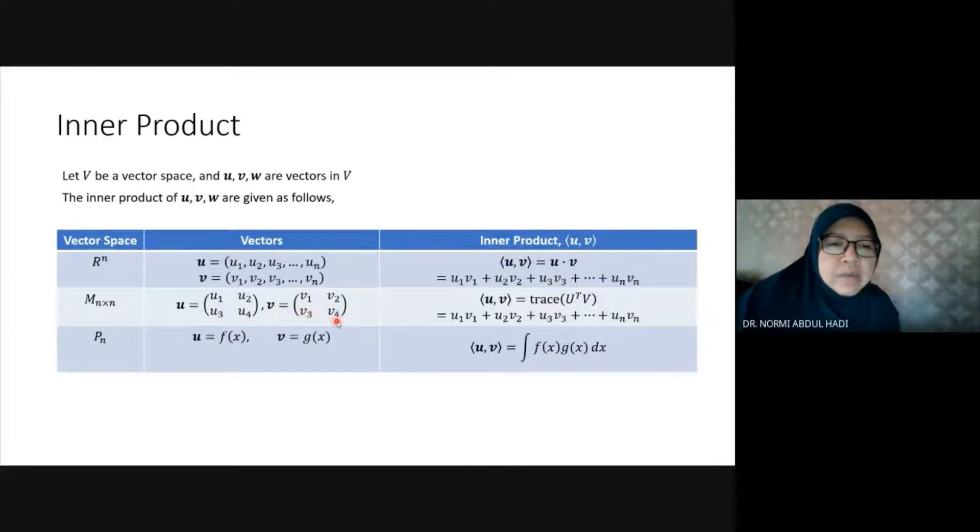For Rn, how to calculate the inner product? The inner product of u·v is actually the dot product: u1v1 + u2v2 + u3v3 + ... + unvn.